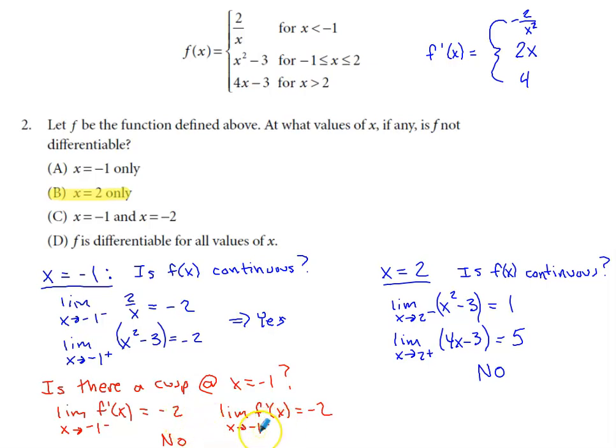Now what happens if I approach negative one from the bigger side on f prime? Well, on the bigger side of negative one, the function definition tells me I'd be on the middle piece of the function. The derivative of that middle piece is 2x. What's the slope of the graph as we approach negative one on that middle piece of the function from the bigger side? Two times negative one, which is negative two.